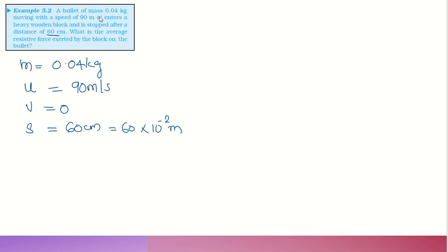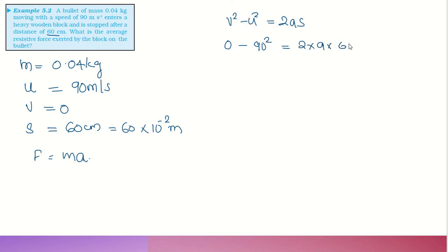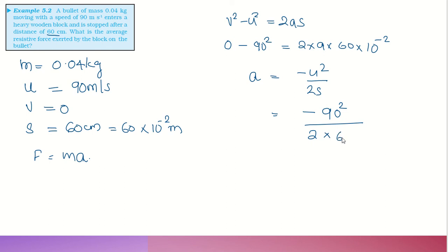To find the force, we use F equals mass into acceleration. We don't have acceleration directly, so we use the equation of motion: V² = U² + 2as. So 0 = 90² + 2 × a × 60 × 10⁻². This gives acceleration = minus 90² divided by (2 × 60 × 10⁻²) = minus 6,750 meters per second squared. The negative value indicates retardation.